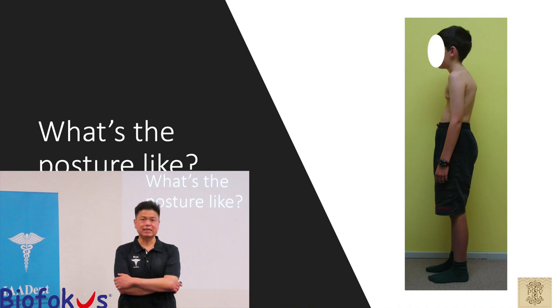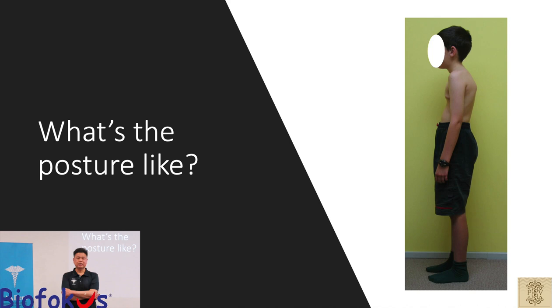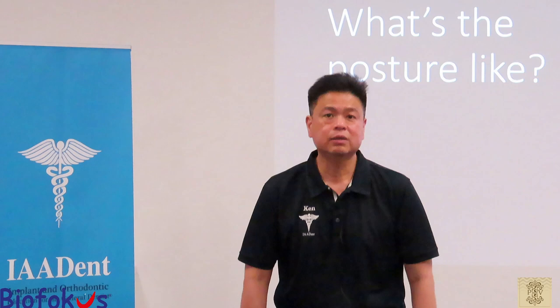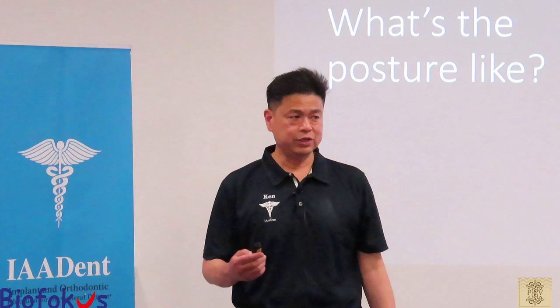A classic example is someone with a hollow chest, forward head posture, and rounded shoulders — a person like that cannot breathe deeply. In fact, if they were to stand soldier-straight, chest out, chin down, head straight, they would basically self-strangulate. They have to change their body posture to accommodate their dentofacial dysmorphosis — that is what we are talking about when we discuss the correct growth and development of a patient.